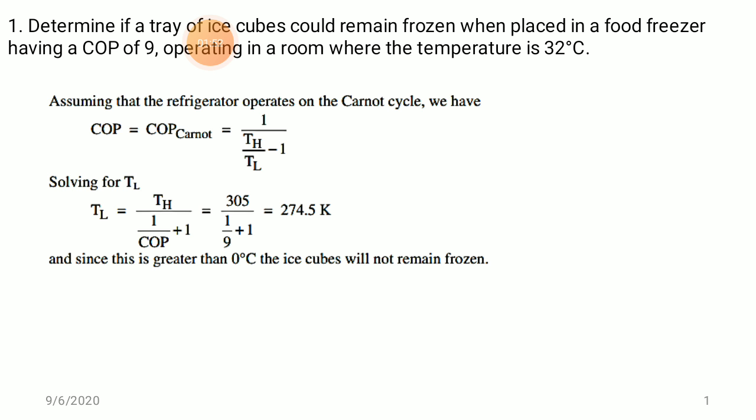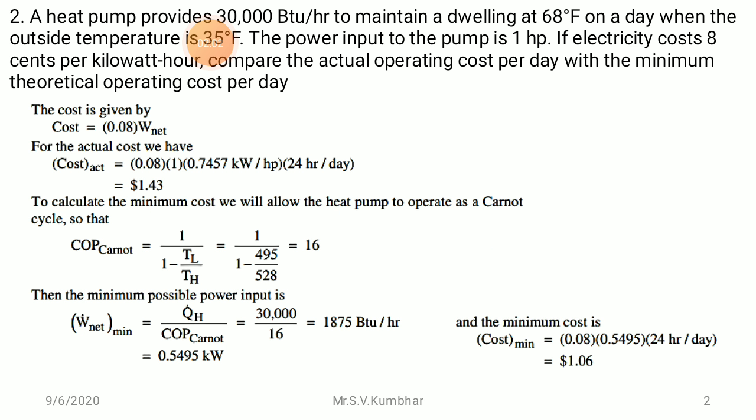If you subtract 273 from 274.5 K, it is greater than 0°C, so the ice cube will not remain frozen because above 0°C it will be converted into water. Next numerical: a heat pump provides 30,000 BTU per hour to maintain a dwelling.